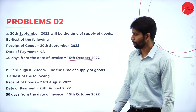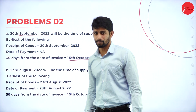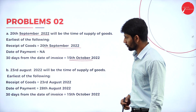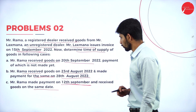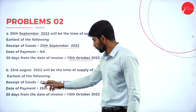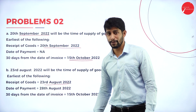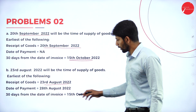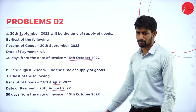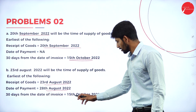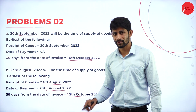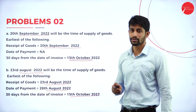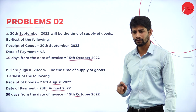Case B: Receipt of goods is 23rd August 2022. Date of payment is 28th August 2022. 30 days from the date of invoice is the same as the first case — 15th October 2022. In these three dates, which is the earliest? The earliest date is 23rd August 2022. That will be the time of supply of goods in Case B.